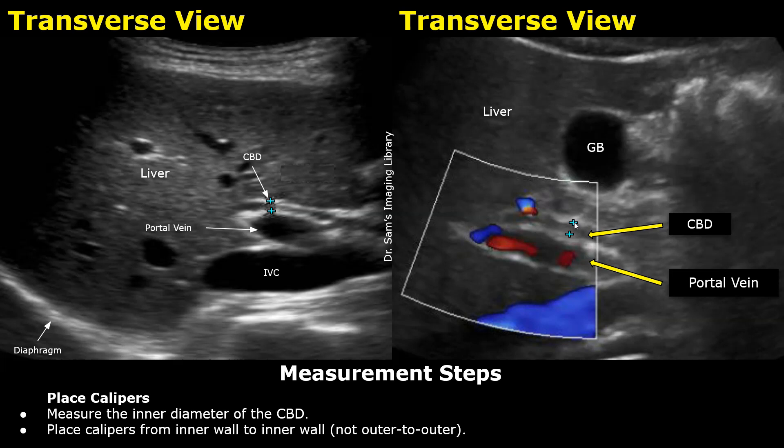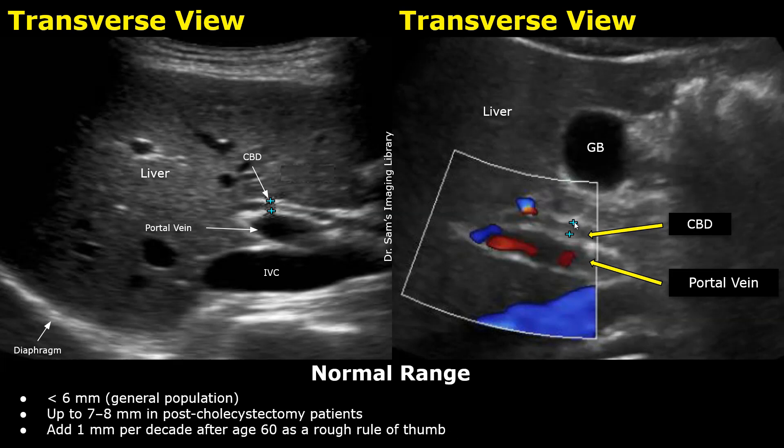The normal diameter of the common bile duct is usually less than 6 millimeters, and in post-cholecystectomy patients, the normal range can be up to 7 to 8 millimeters. After the age of 60 years, add 1 millimeter to the normal range. So in an 80-year-old patient, a CBD diameter of 8 millimeters is considered normal.